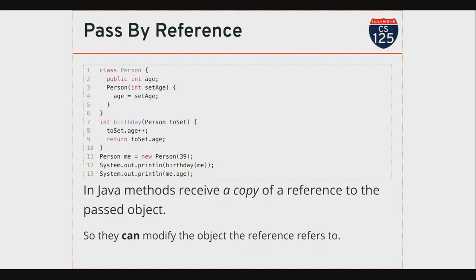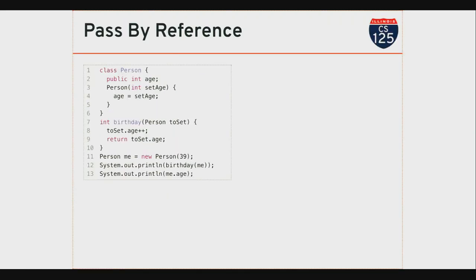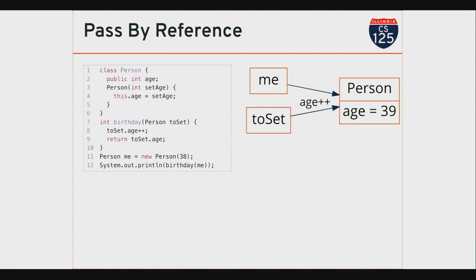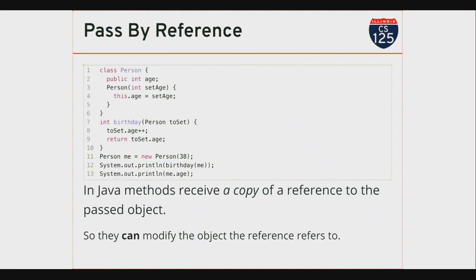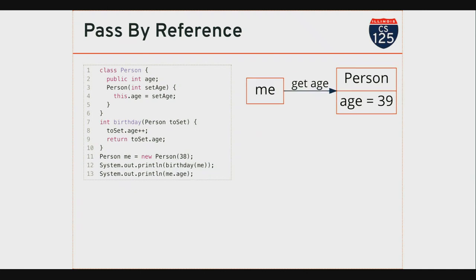So essentially, while birthday is running, I have two references to the same Person object — one being used by the birthday function, and the second one being held by the caller of the function. This is one place where you would have two references to the same object. This allows functions in Java to modify the objects that they are passed. If you make changes to an object inside a function, those changes are visible to the caller of the function. Here's the diagram version: I create a Person with age 38, I call birthday, and when birthday is running, the calling code still has a reference called me, but birthday also has a reference. They refer to the same Person — so when birthday makes a change to the Person, that change is visible to the caller once the method returns.